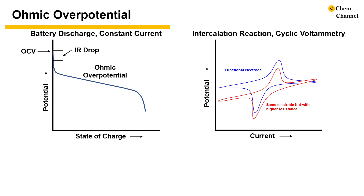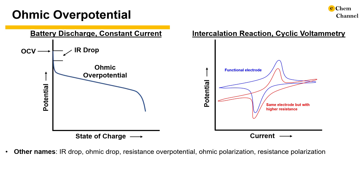Ohmic overpotential is a deviation of potential due to internal resistance. This internal resistance includes the ionic resistance of the electrolyte and the electronic resistance of the cell components. It has other names like IR drop, where IR stands for internal resistance, ohmic drop, resistance overpotential, and other variations where overpotential and polarization are used interchangeably.